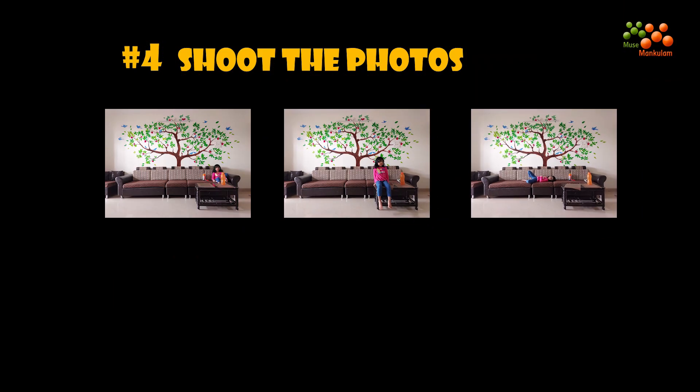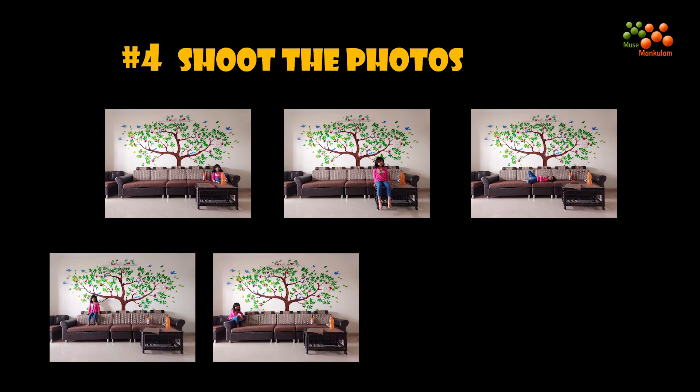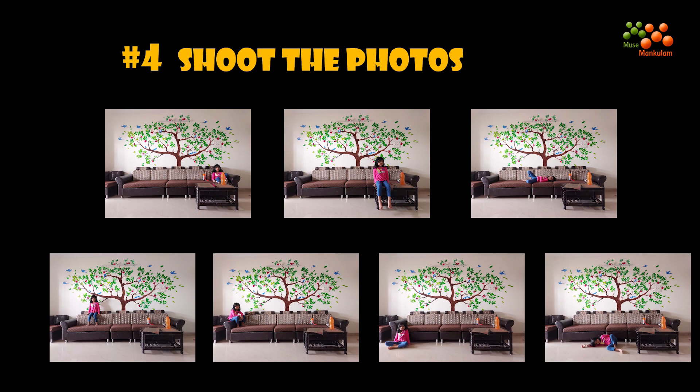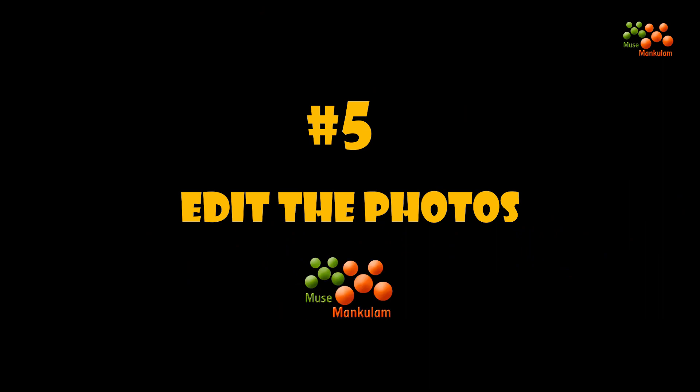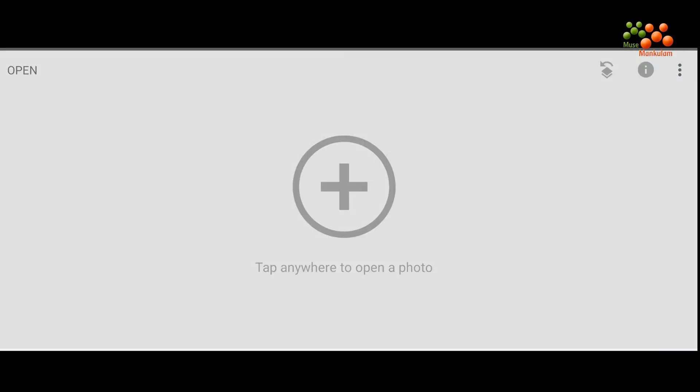Step number four: shoot, shoot, shoot — all the required photos. Step number five: editing. We'll be doing the editing with a mobile app, and with a Snapseed tutorial. So let's go through the editing steps. I'm using Snapseed — open Snapseed.